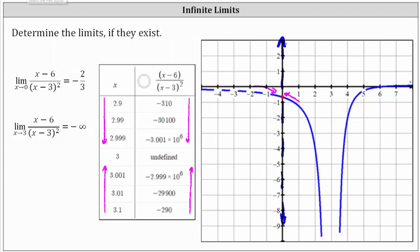Going back to the graph, because we are approaching x equals three, let's sketch a vertical line at x equals three. Notice how this is actually a vertical asymptote of the graph. As we approach x equals three from the right, the function values decrease without bound, and as we approach from the left, the function values decrease without bound as well. Therefore, the limit of the rational function as x approaches three is negative infinity. We normally indicate this as negative infinity, but remember negative infinity is not a real number — this actually indicates the limit does not exist because it's not approaching one specific real number. I hope you found this helpful.